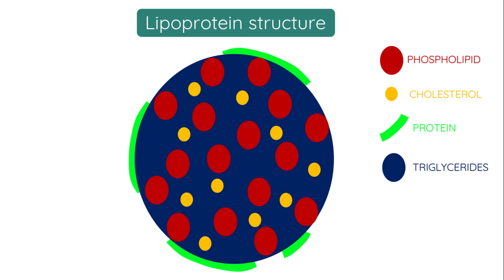Cholesterol is transported around the body by lipoproteins. Lipoproteins are made in the liver and contain varying degrees of triglycerides, phospholipids, cholesterol and proteins. The aim of lipoproteins is to deliver these molecules throughout the body where they are needed. Triglycerides for example are used as a source of energy, phospholipids as components of cell membranes, and cholesterol has many functions which will be discussed shortly.